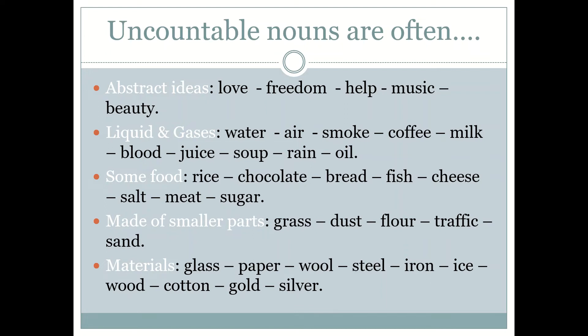Things made of smaller parts are also uncountable, such as: grass, dust, flour, traffic, and sand. Materials like glass, paper, wool, steel, iron, ice, wood, cotton, gold, and silver are uncountable too.